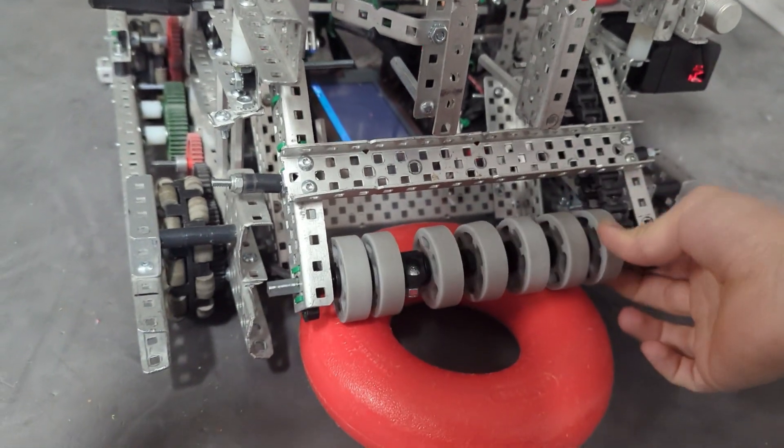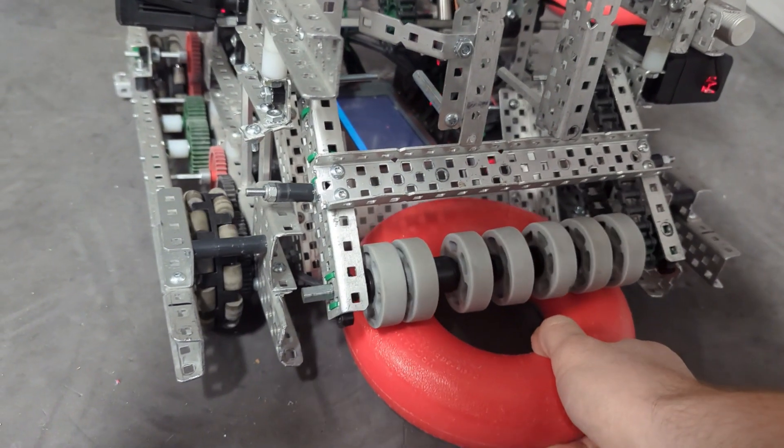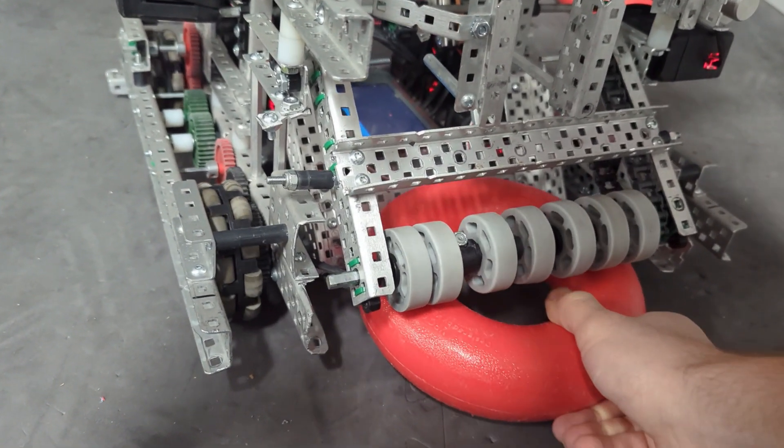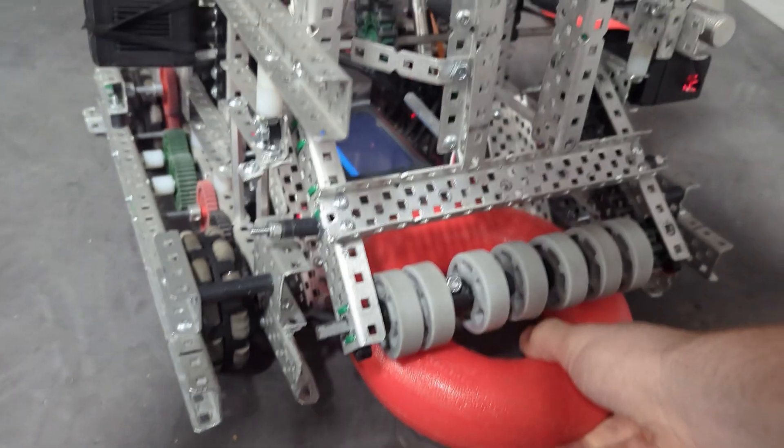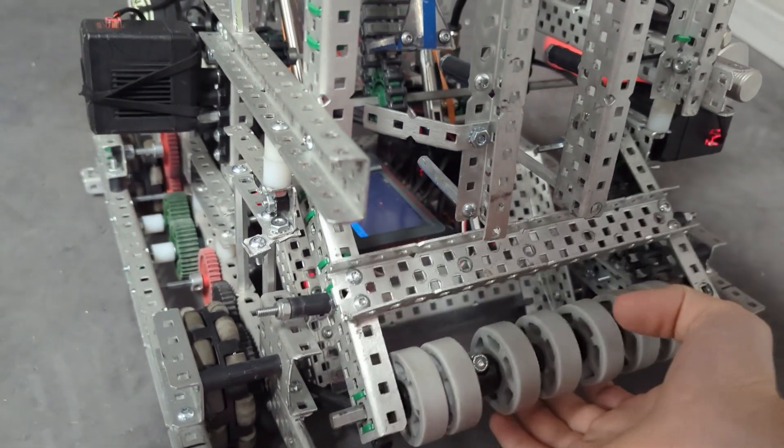So that way the wheels are always contacting the ring no matter what angle it's at. You can see it's kind of going up and down as it intakes the ring. That's the advantage to a floating intake. It's always contacting the ring like that. So definitely build a floating intake. It's going to help your intake just be a lot better.